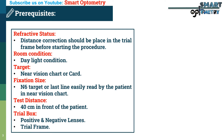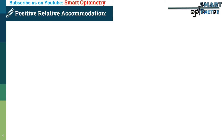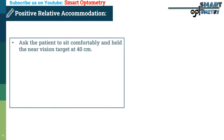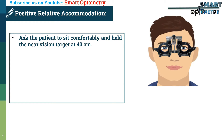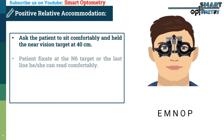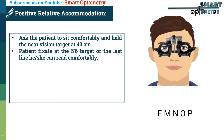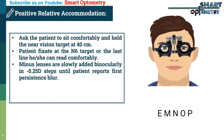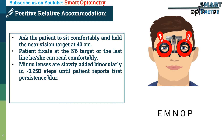To measure positive relative accommodation, ask the patient to sit comfortably and hold the near vision target at 40 centimeters. The patient fixates at the N6 target or the last line they can read comfortably. Minus lenses are slowly added binocularly in 0.25 dioptre steps until the patient reports first persistent blur. We add minus 0.25, then minus 0.5 — patient is still seeing clearly, so we continue adding.